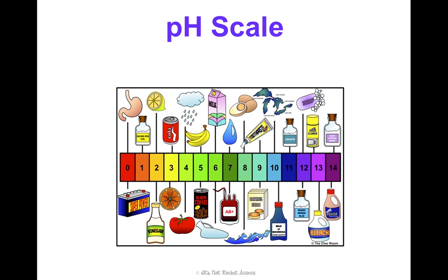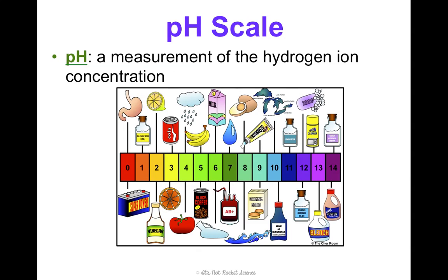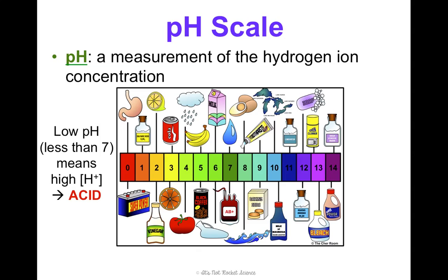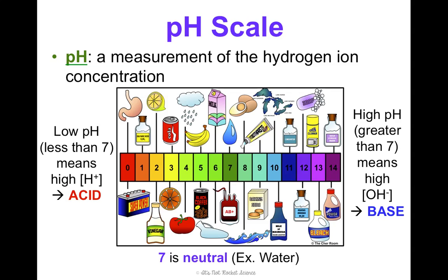Something else I must mention — this is the briefest overview of all time — but I have to mention the pH scale. pH is a measurement of the hydrogen ion concentration in a substance. A lower pH, less than 7, means you have really high hydrogen ion concentration, and that means something is very acidic. The lower it is, the more acidic it is. Higher pH, greater than 7, means high hydroxide concentration, low hydrogen ion concentration, and the higher you go, the more basic it is.